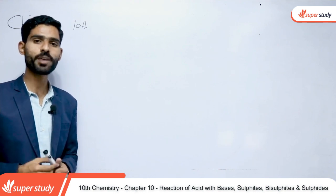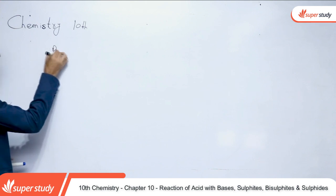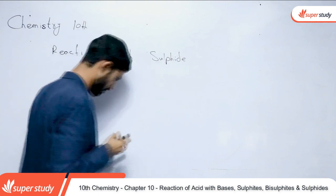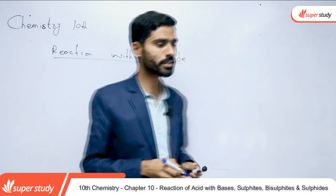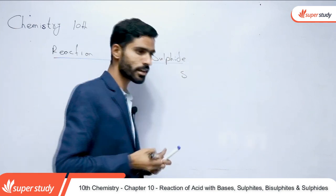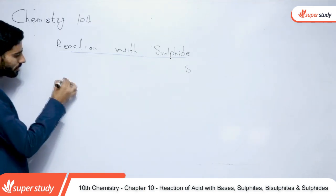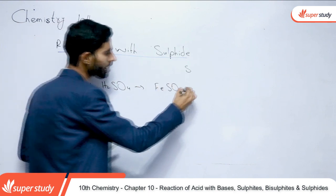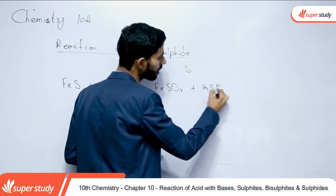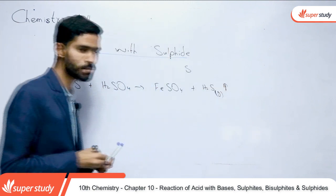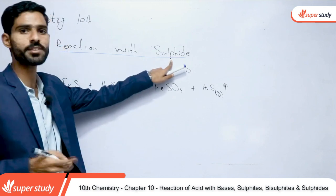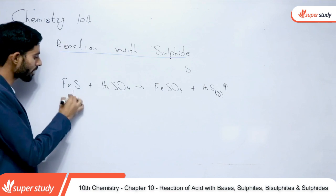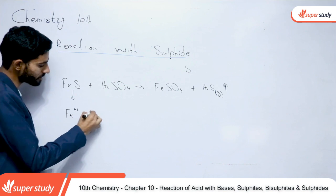So finally we have the last reaction, which is the reaction with sulfide. Ab hum dekhenge reaction with sulfide. Sulfide wahan use hota hai jab bhi kisi compound ke andar sirf S maujood ho kisi ek metal ke saath. Woh sulfide hota hai. Reaction karte hain — iron sulfide ko sulfuric acid ke saath react karte hain.